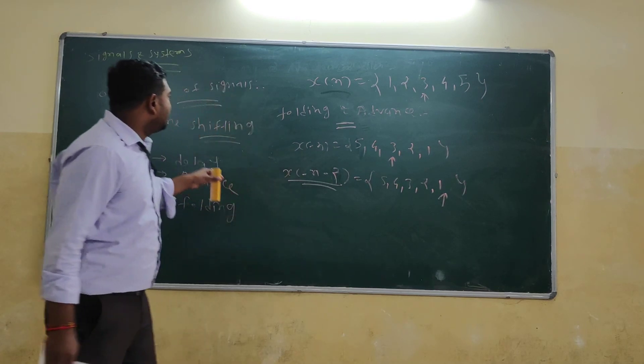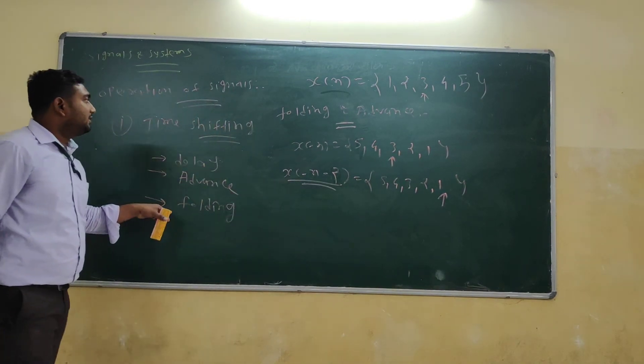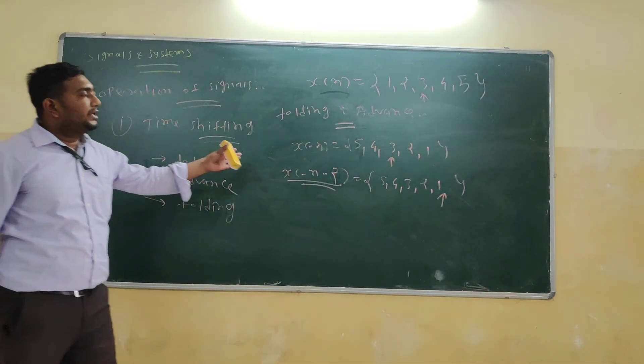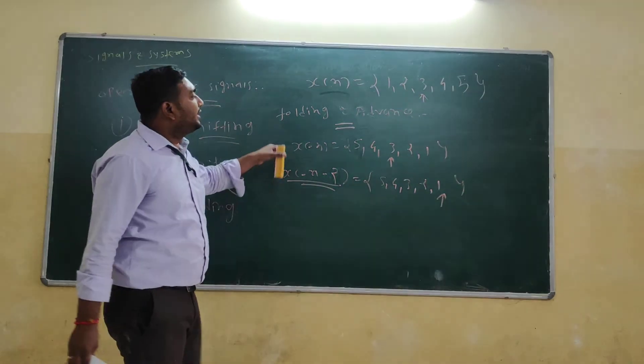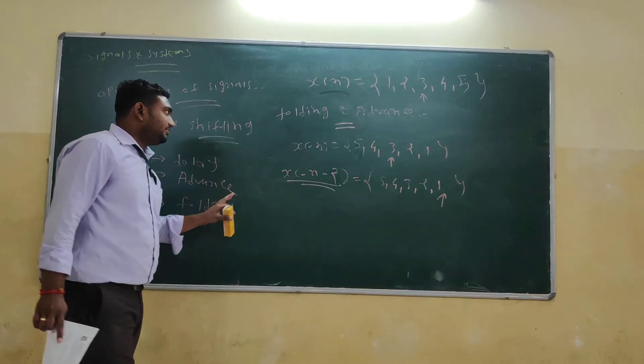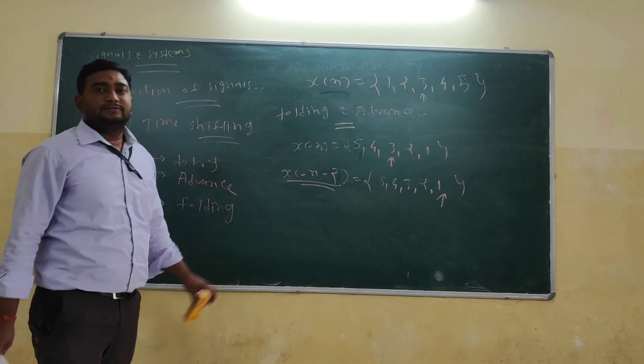So these are the different types of time signal properties: delay, advance, folding, folding and delay, and folding and advance. That is all for today.